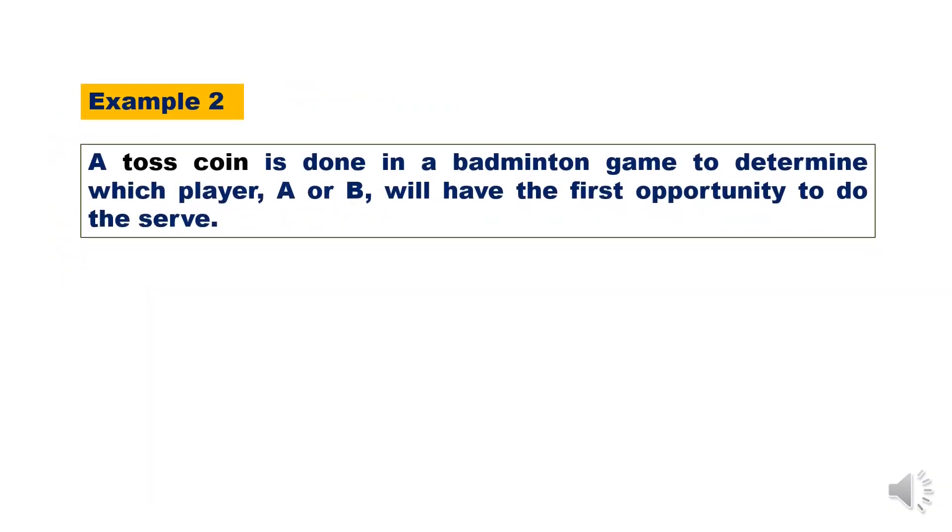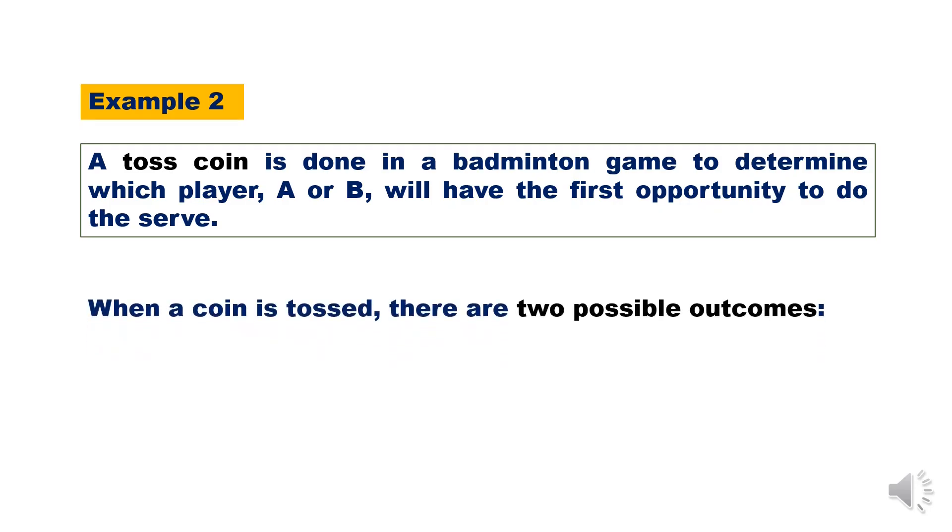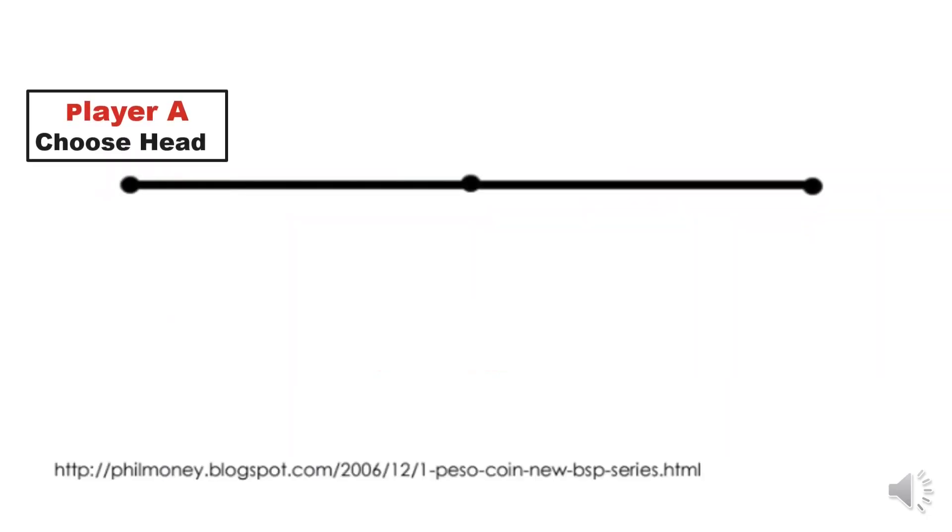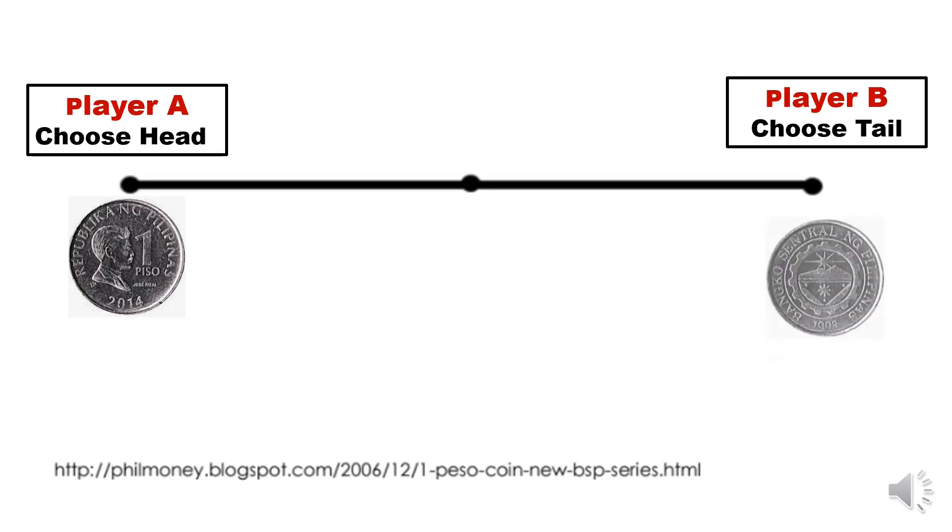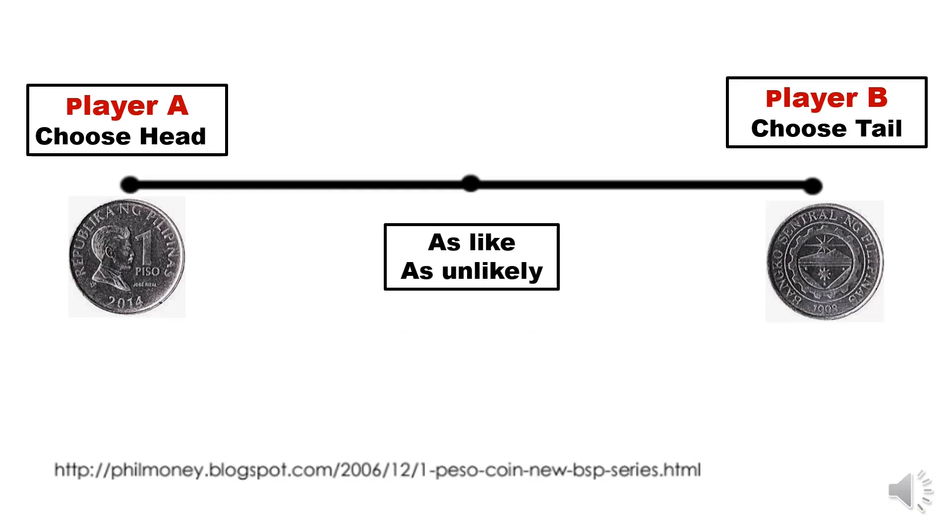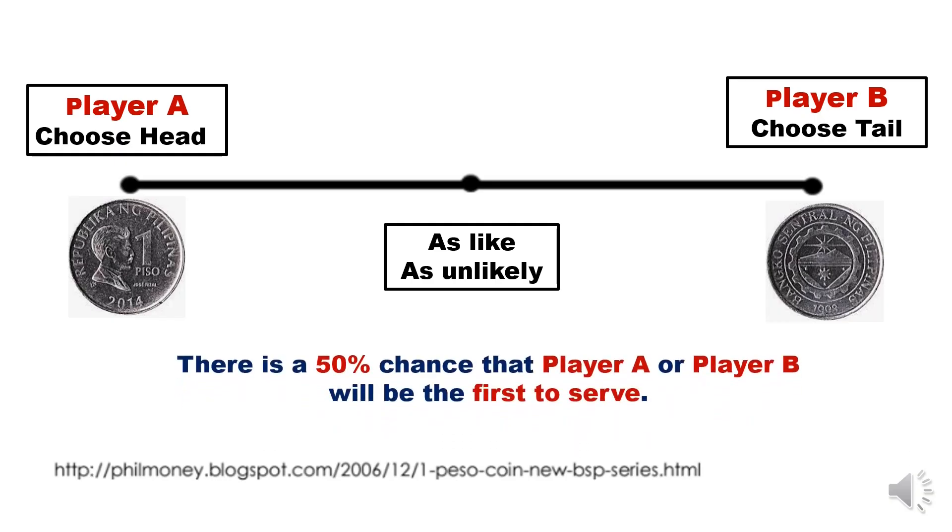Example 2. A coin toss is done in a badminton game to determine which player A or B will have the first opportunity to do the serve. When a coin is tossed, there are two possible outcomes, head or tail. Player A chooses head, Player B chooses tail. There is a 50% chance that player A or player B will be the first to serve.